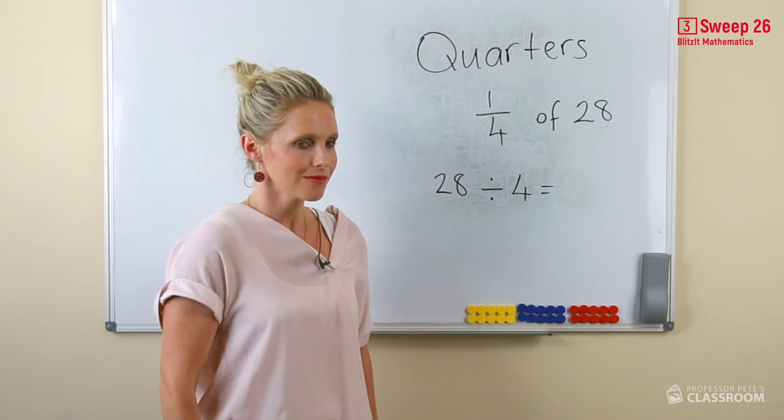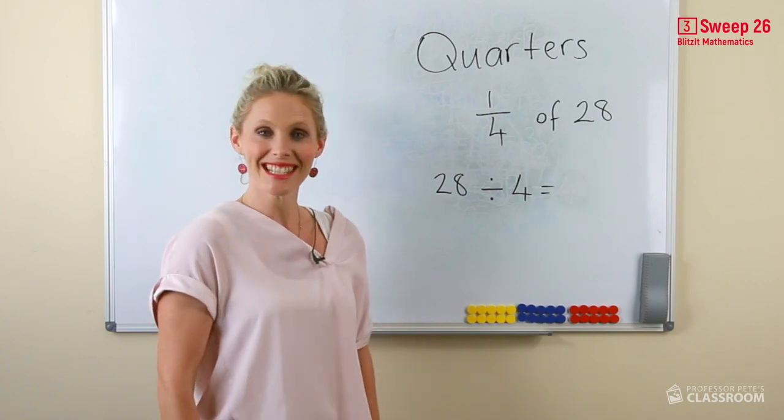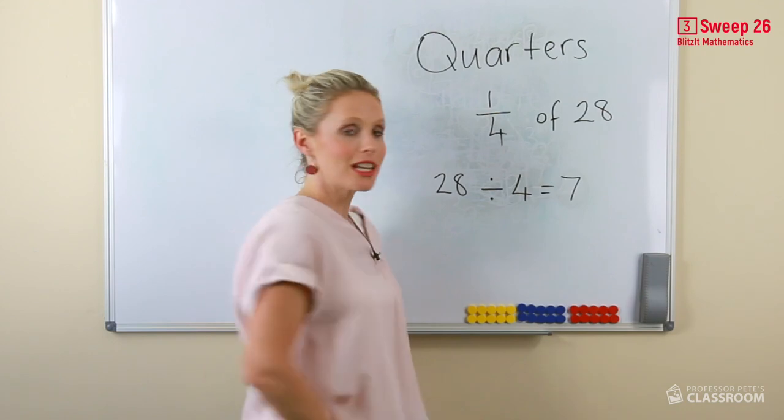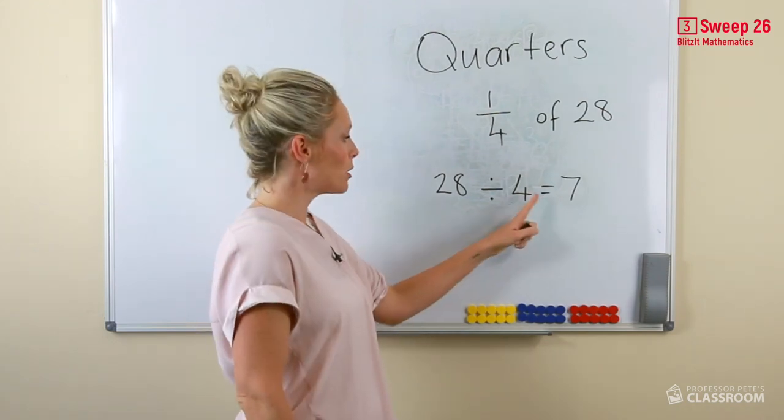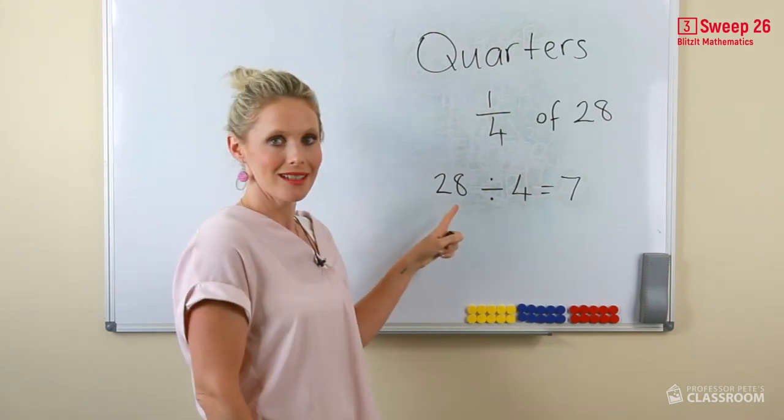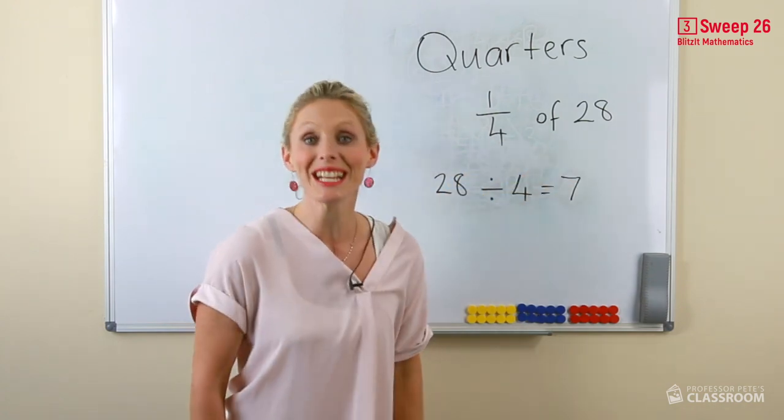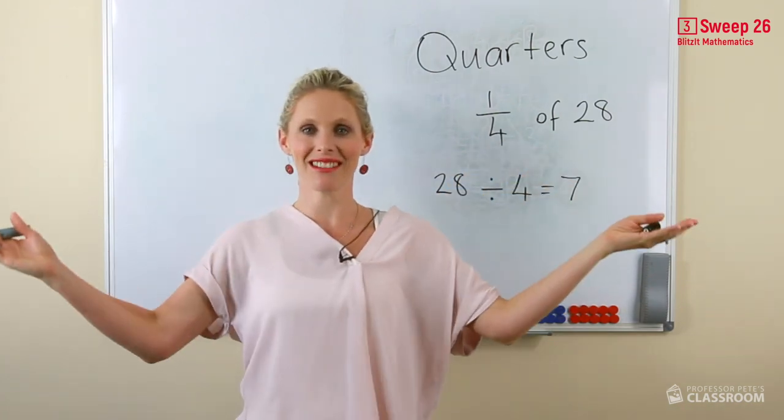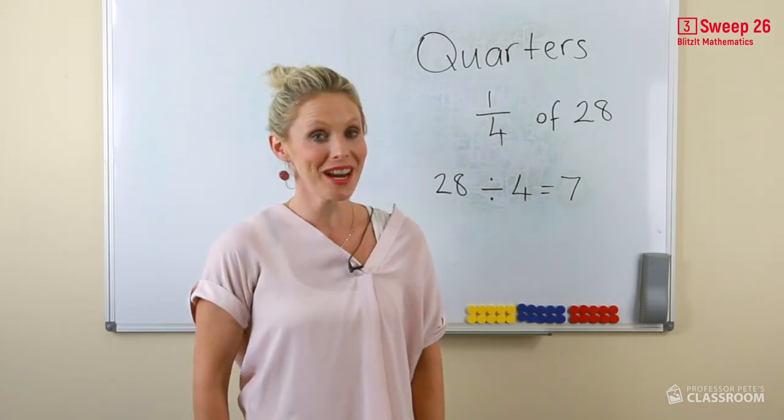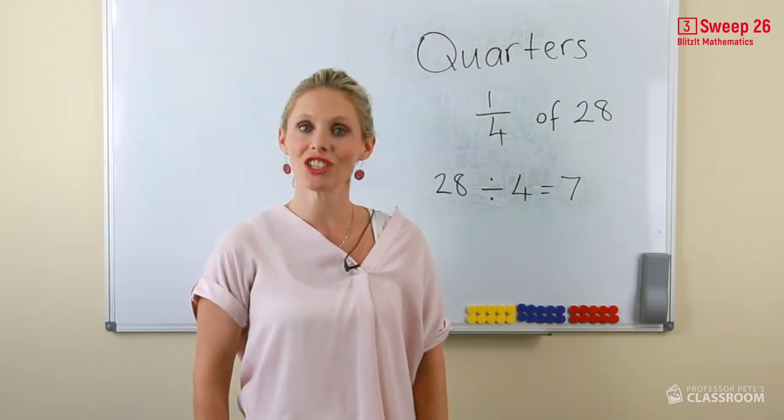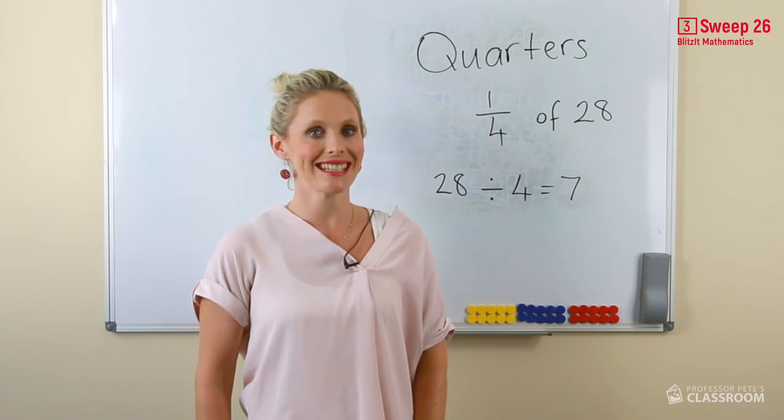That's right, the answer is 7. And we can check our answer: 7 multiplied by 4 equals 28. Therefore a quarter of 28 equals 7. The farmer friend of mine will get seven sheep. That is a quarter.